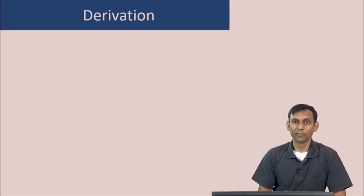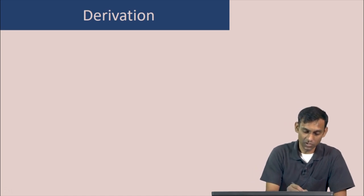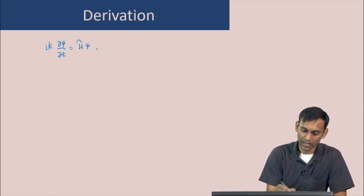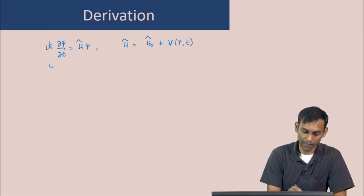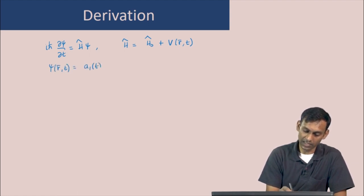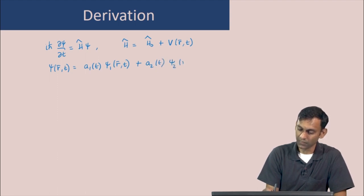To obtain the expressions for a1 and a2, let us substitute the form of psi into the Schrödinger equation. The Schrödinger equation is i-h-bar del-psi by del-t equals H of psi, where H equals H-naught plus V(r,t), and psi(r,t) equals a1(t) psi1(r,t) plus a2(t) psi2(r,t).